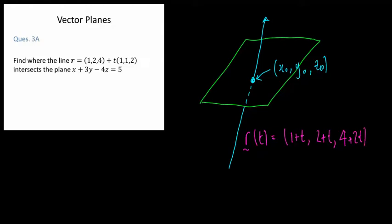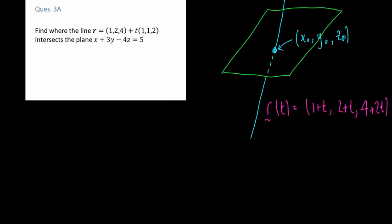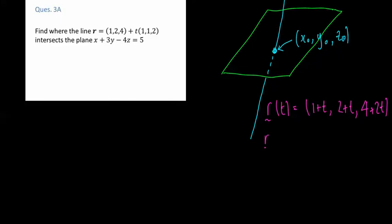The next thing to remember is that R is our position vector and it's always given as X of T, Y of T, Z of T. We saw when we found the parametric representation of a plane, there were two parameters, S and T. So X was a function of S and T, Y was a function of S and T, Z also a function of S and T.